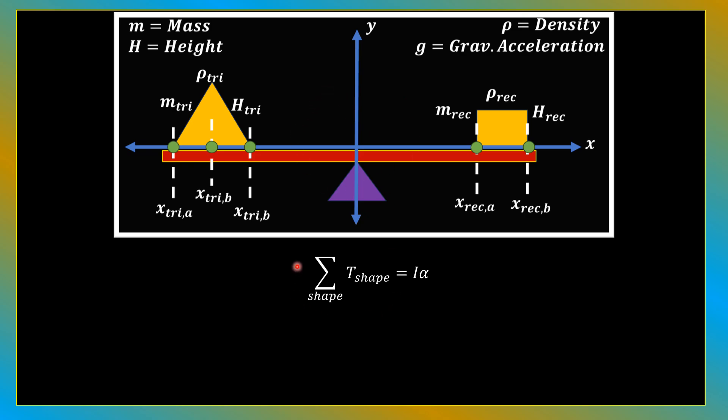But how do we solve for alpha? We know that the sum of all torques acting on a mass or system is equal to the moment of inertia i multiplied by alpha, which is angular acceleration. Thus, angular acceleration is proportional to the sum of torques acting on the system. Since moment of inertia is always positive or greater than or equal to zero, the sign of the sum of torques acting on the system is the same as that of alpha.